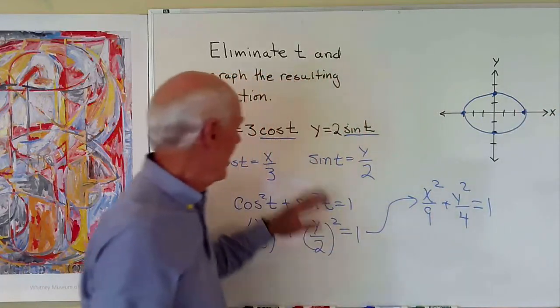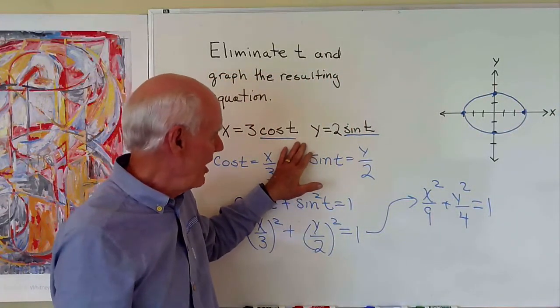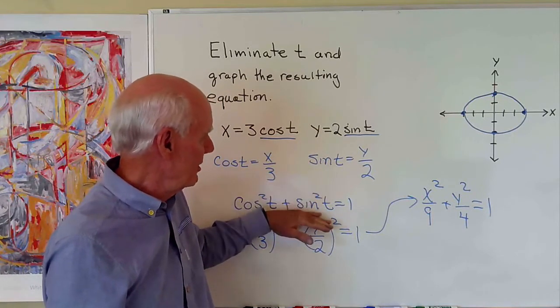And that's the graph of this set of parametric equations. And I find it by eliminating the parameter t.